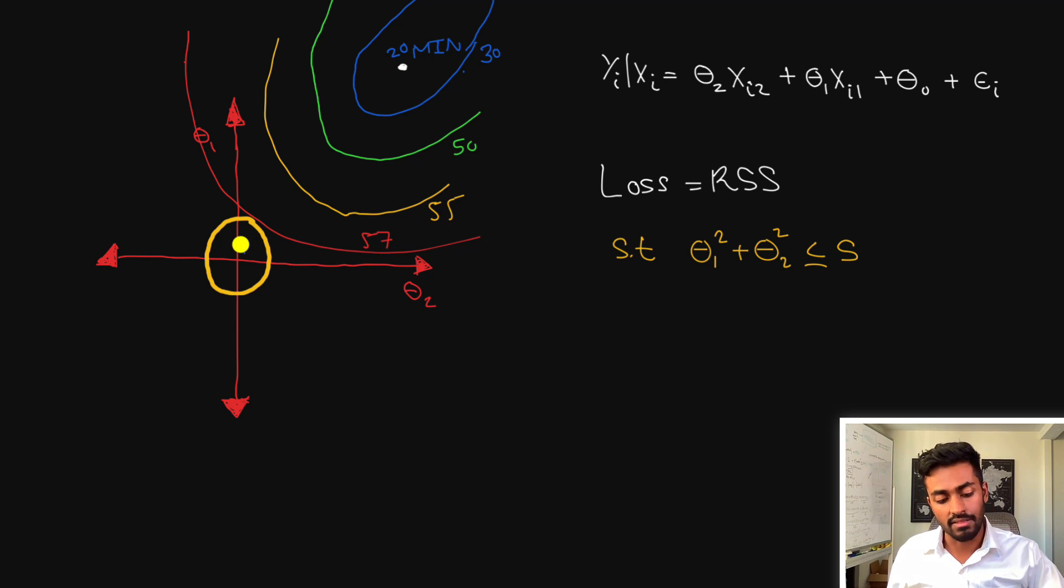And what our goal is is to find the minimum value of the residual sum of squares that fall within this region. It's probably going to be somewhere along like this point over here. This formulation of using a circle to map the values of theta 1 and theta 2 using this constraint is ridge regression.